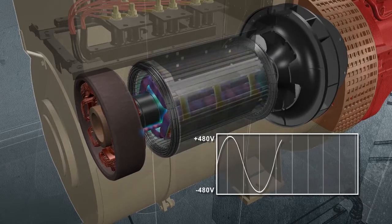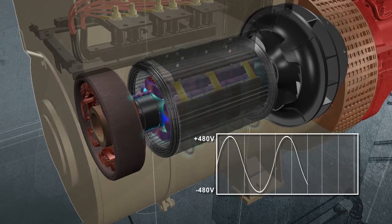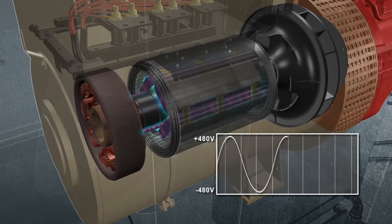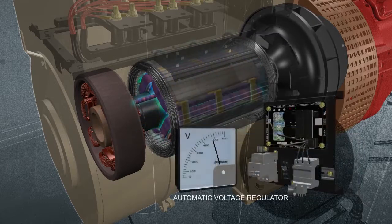The stronger the field, the higher the peaks. Ideally, voltage levels should be consistent so that constant power is provided when under load. To do so, an automatic voltage regulator, or AVR, adjusts the magnetic fields as needed.